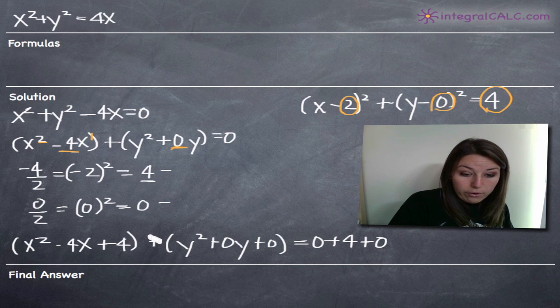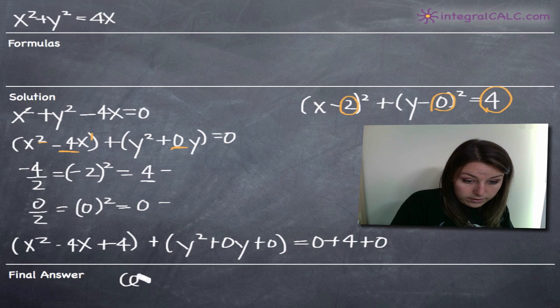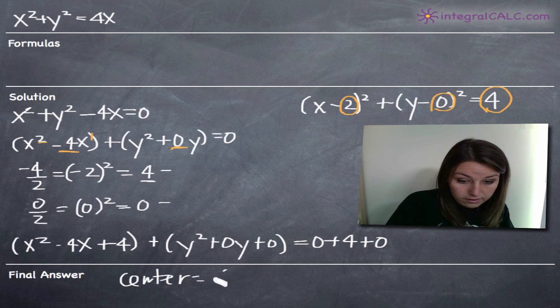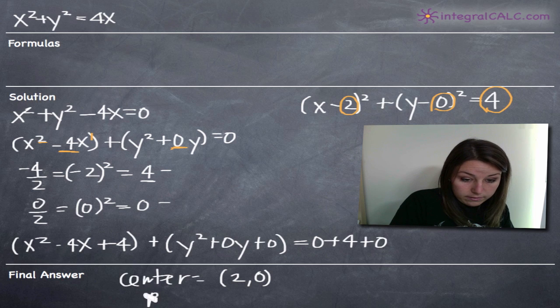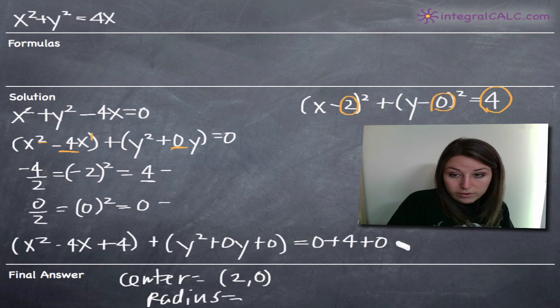So our center is going to be at the point 2, 0, and the radius is going to be the square root of 4, which is 2. We always take the square root of this right-hand side to get the radius.